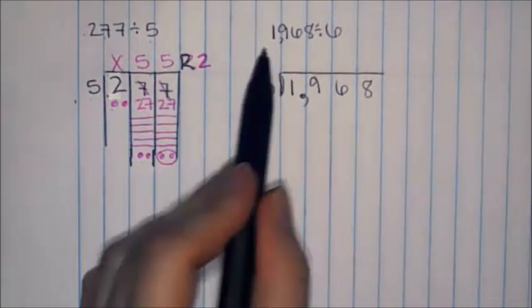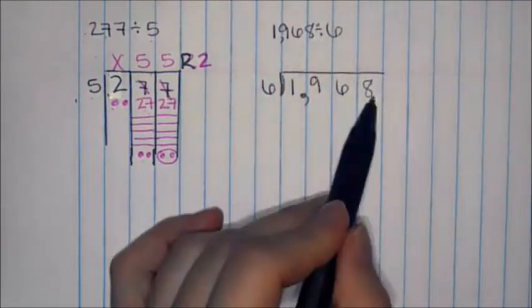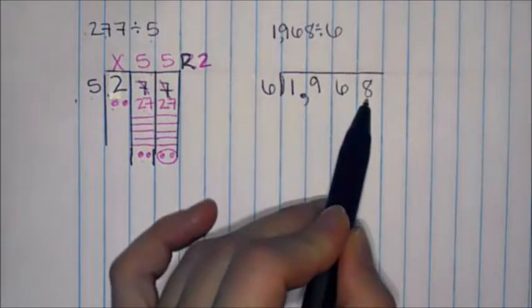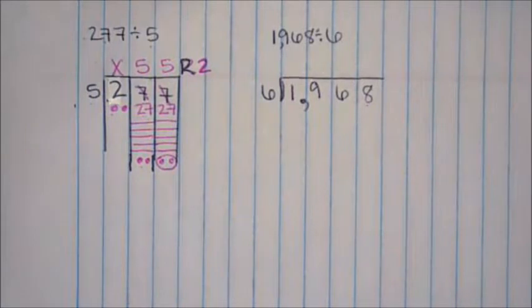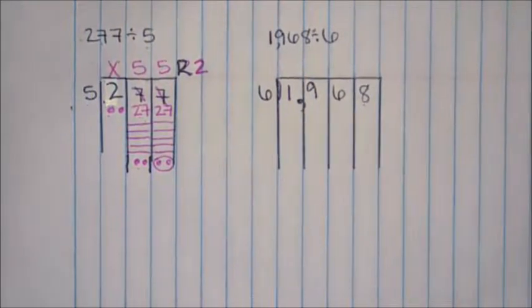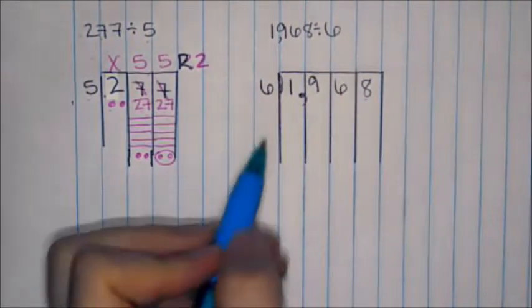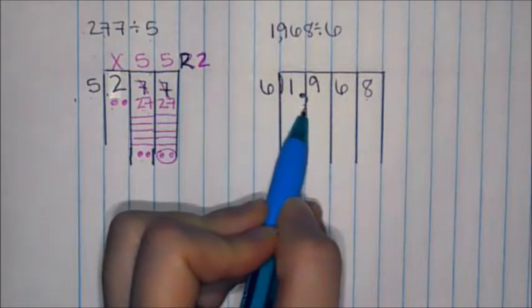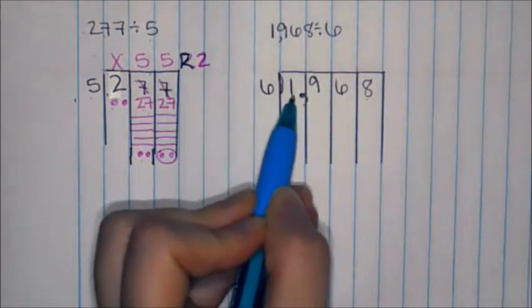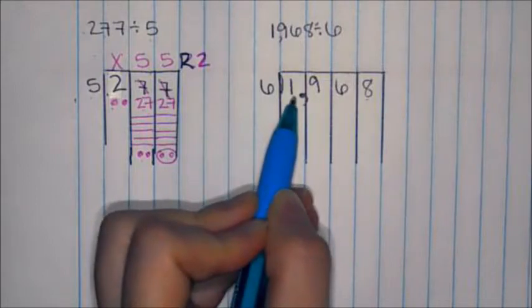I have 1,968 divided by 6. So 1,968 in the house divided by 6 on the outside. I'm going to bring the walls down. We're going to do our multiples. I would do 6 times 1 and that would be a dash. 6 times 1 is 6. That is obviously too big. We cannot go above the 1.